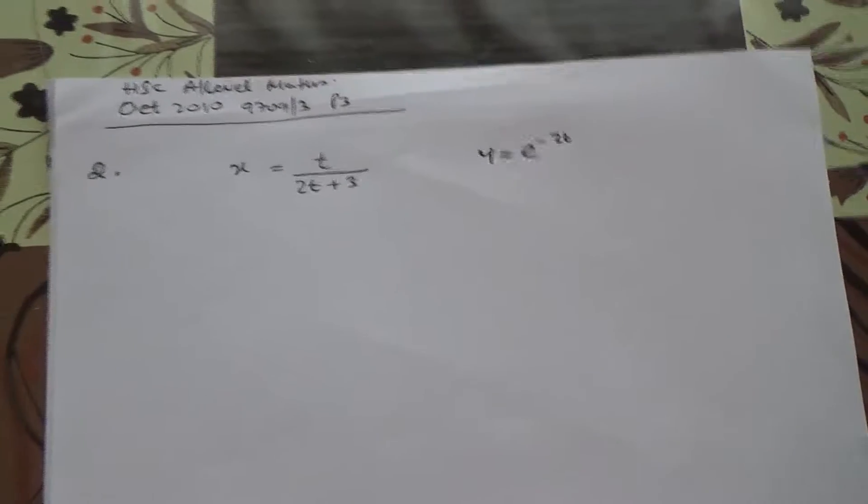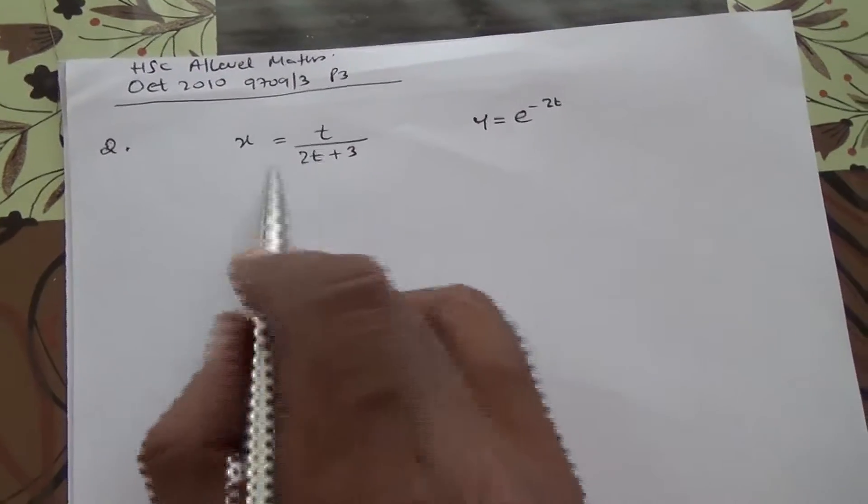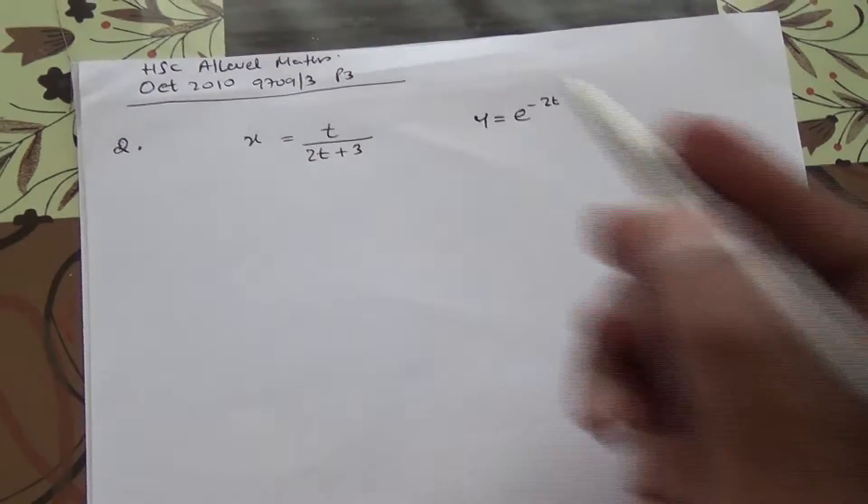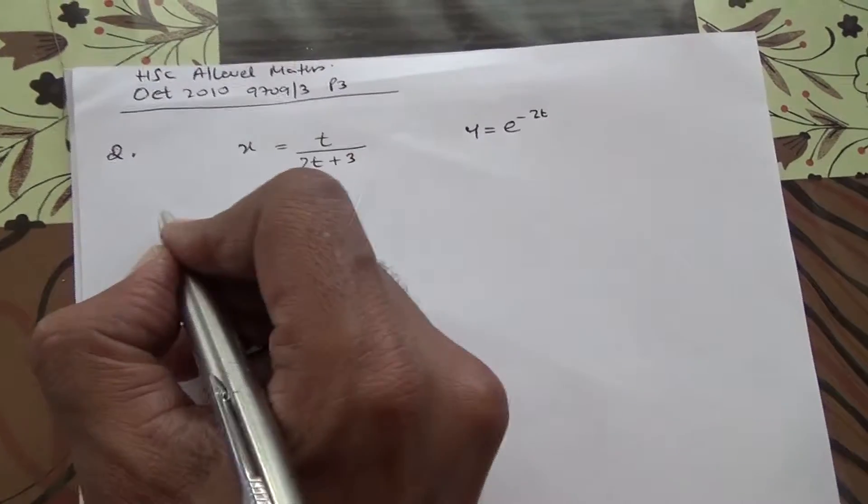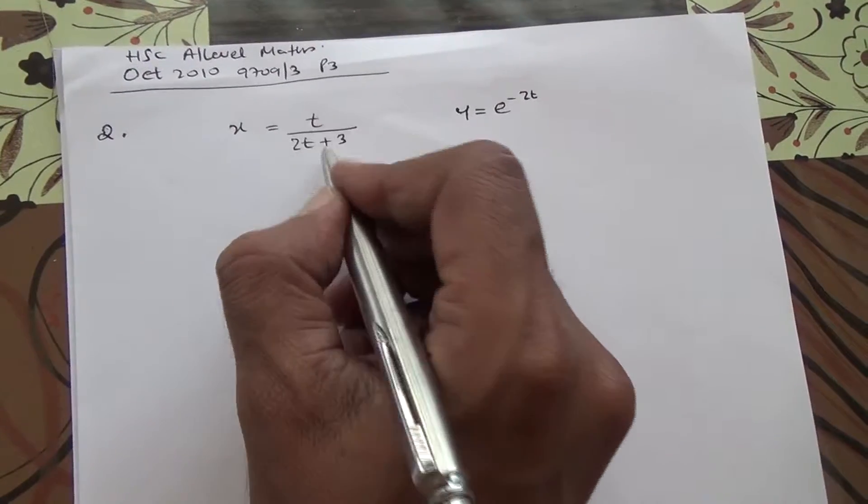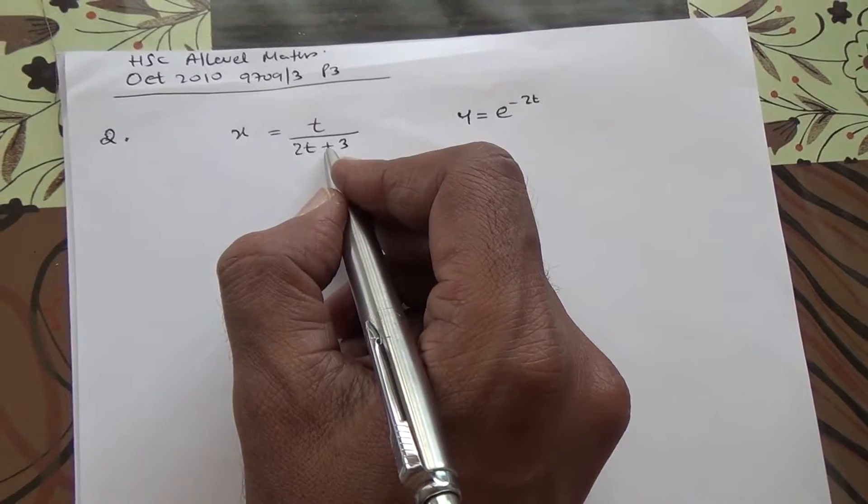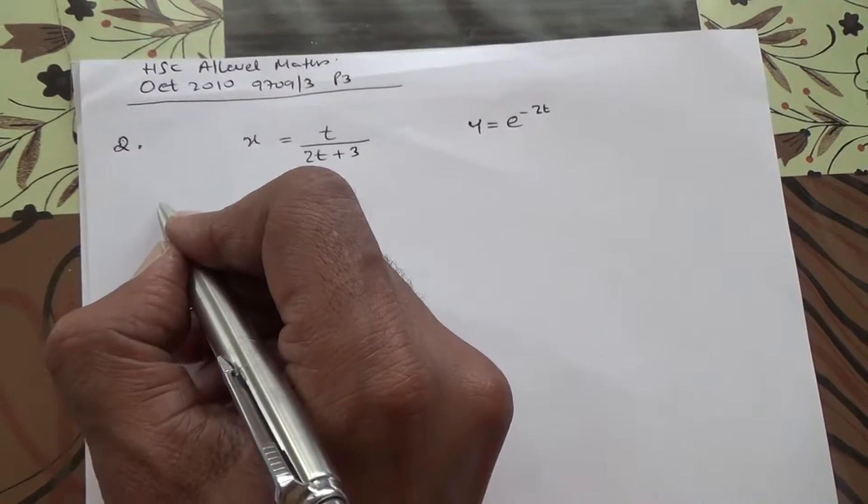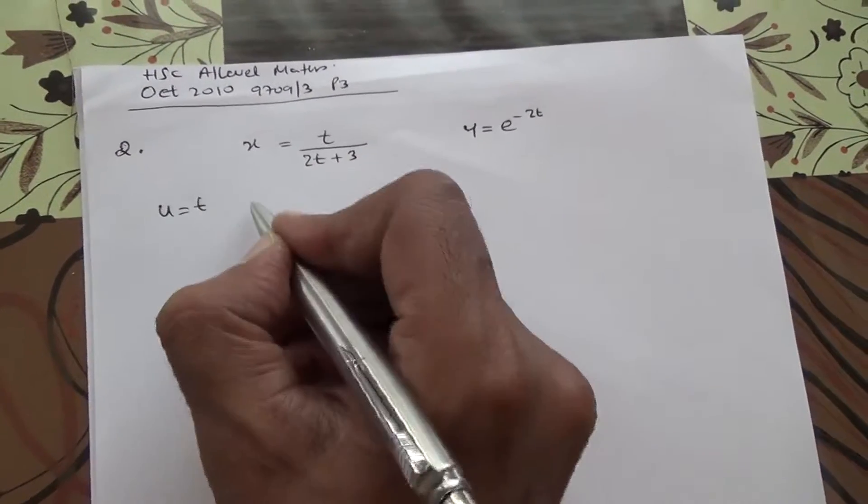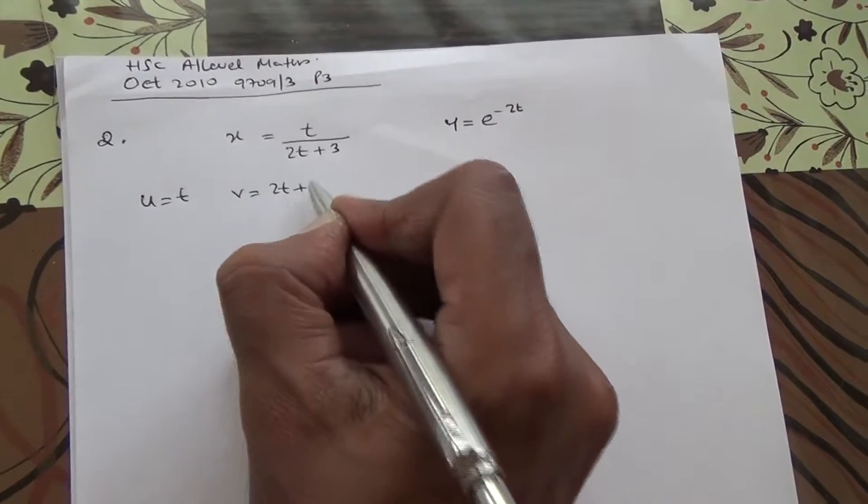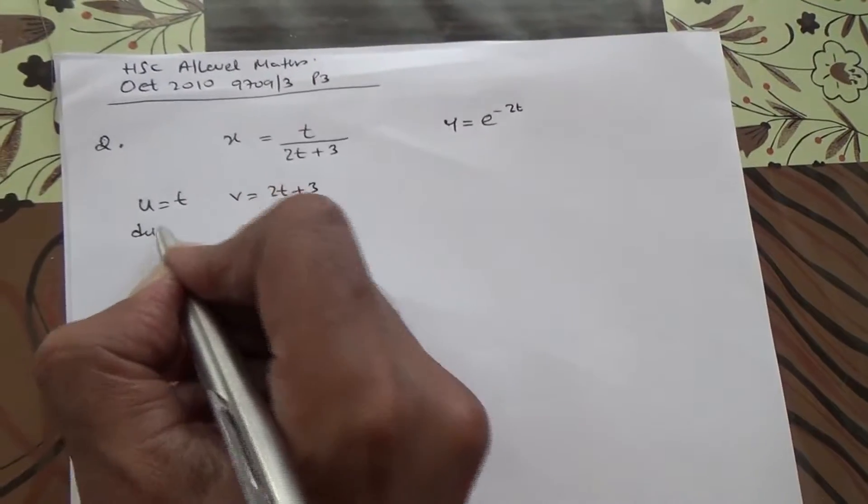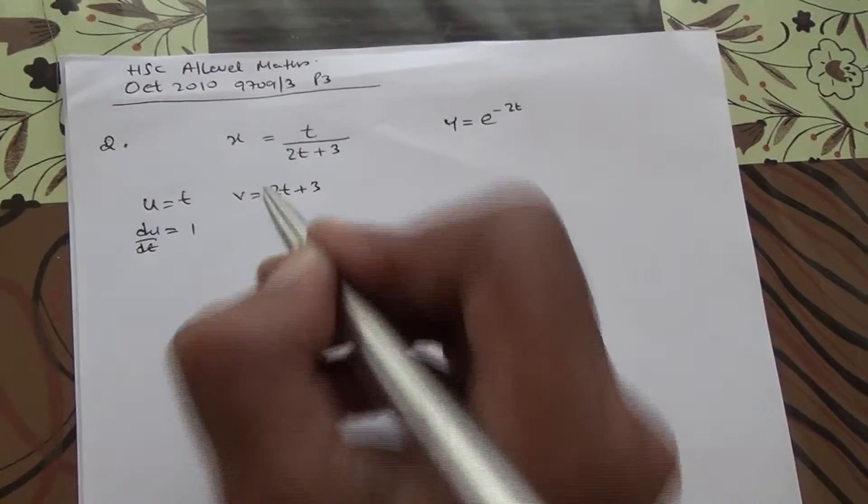So here we are. Now, first of all, we're going to differentiate the parametric equations. So differentiate x, and here's the two functions, and it's division, so therefore we're going to be using quotient rule. So we're going to say u equals t, and v equals 2t plus 3, and so we have du over dt equals 1, and dv over dt equals 2.